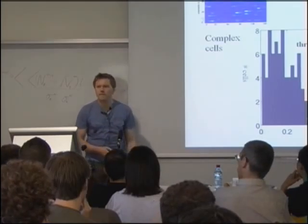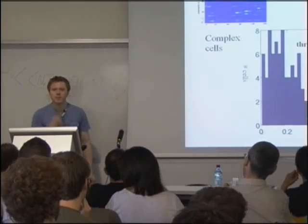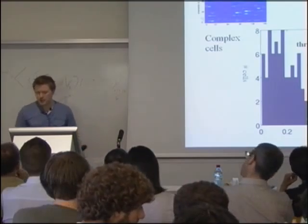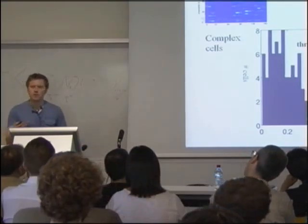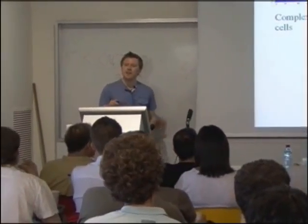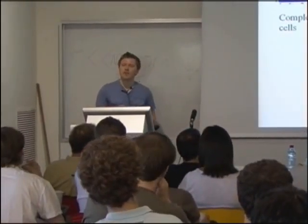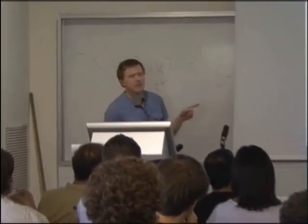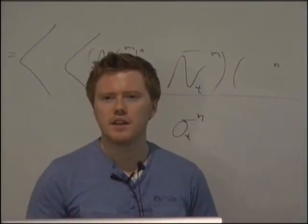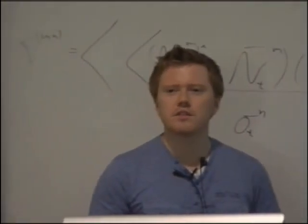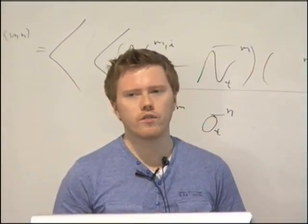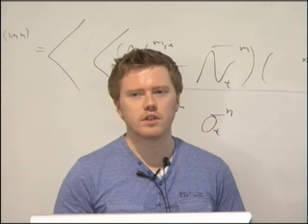The usual F1/F0 ratios are obtained using drifting gratings, which give a good estimate of phase modulation. In our case, we're just presenting gratings with 32 millisecond durations, so the comparison is not straightforward. I haven't empirically looked at the relation between the two measures.